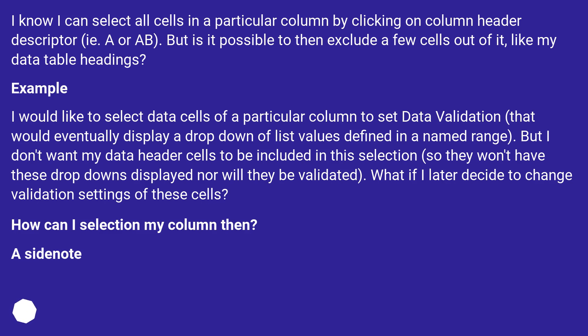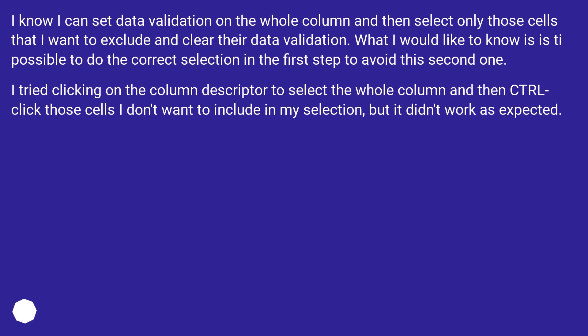A side note. I know I can set data validation on the whole column and then select only those cells that I want to exclude and clear their data validation. What I would like to know is: is it possible to do the correct selection in the first step to avoid the second one? I tried clicking on the column descriptor to select the whole column and then CTRL-clicking those cells I don't want to include in my selection, but it didn't work as expected.